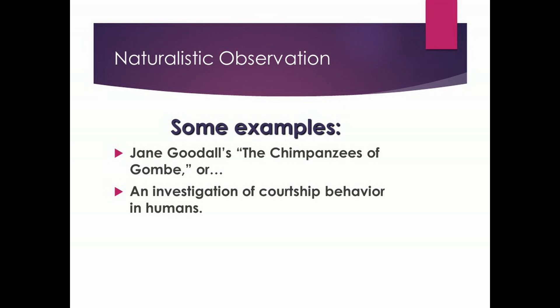So by definition, naturalistic observation takes place in the human or non-human animal's natural habitat. Think about the benefits of conducting this type of study. It's often useful to study behavior in a laboratory or some other type of artificial environment, but to be able to observe behavior as it occurs in the natural environment is incredibly important.